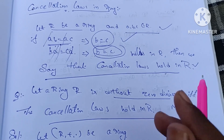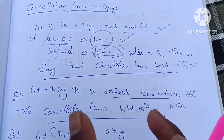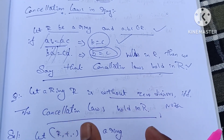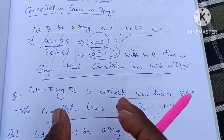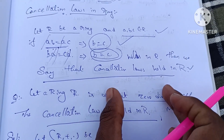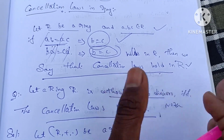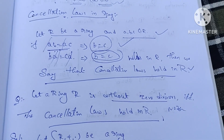Without zero divisors, we can say that cancellation laws hold in R. The if-and-only-if condition means we can say cancellation law holds without zero divisors. So these two conditions, we can prove.